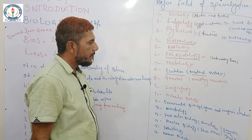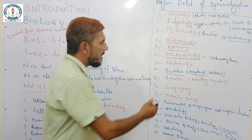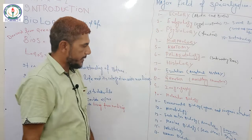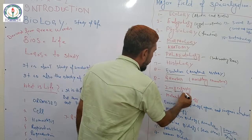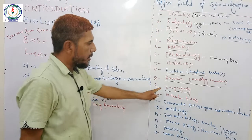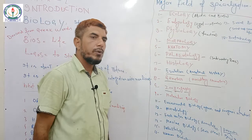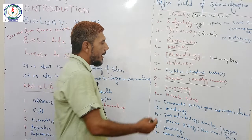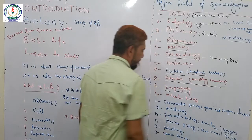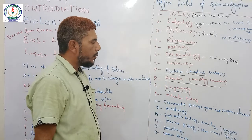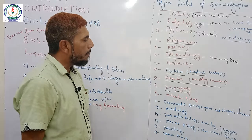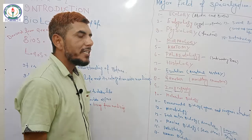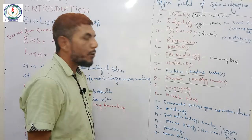Genetics is the branch in which we study hereditary characters, which are transferred from parents to offspring. Zoogeography, as its name indicates, is the study of the distribution of animals in different parts of the world. Next is Molecular Biology, where we study the different molecules concerned with life, like carbohydrates, fats, proteins, etc.